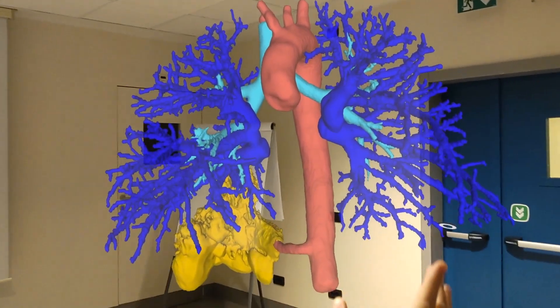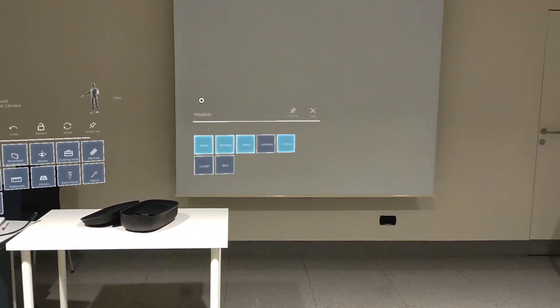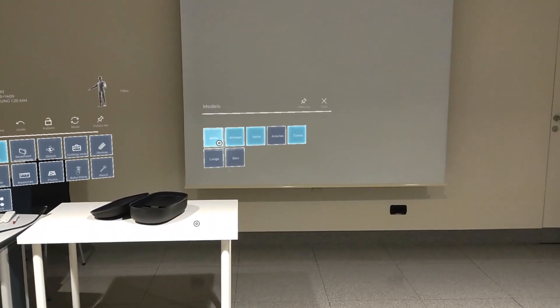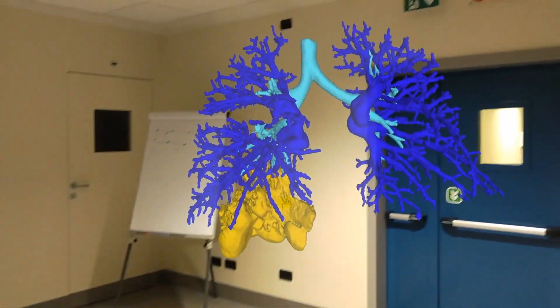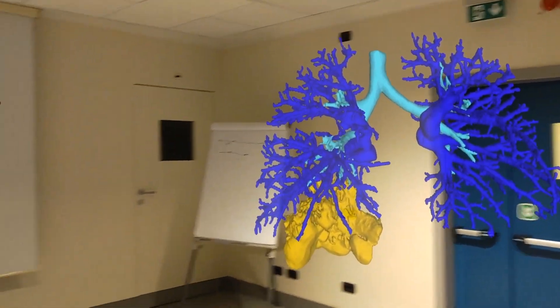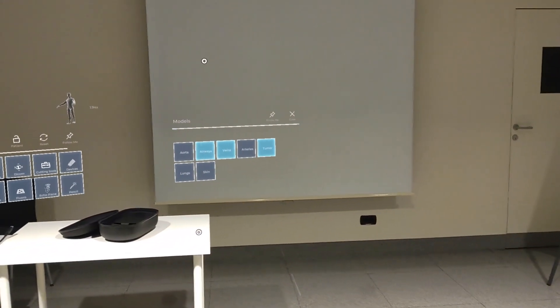We then remove the arteries to better visualize only the bronchial tree in light blue, its relations with the sequestration, and the feeding artery course.